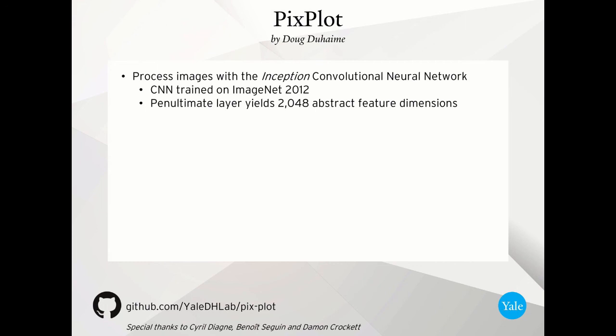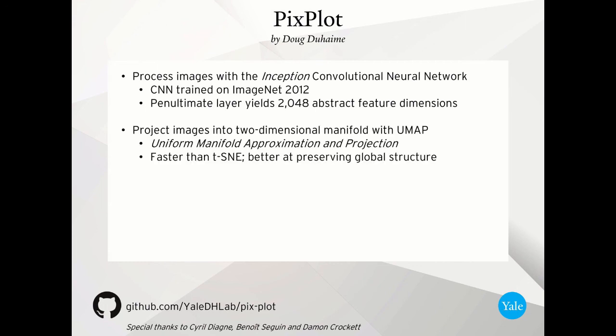This tool actually starts very similar to how neural neighbors work. We basically process all sorts of images, tens of thousands of images with the Inception Convolutional Neural Network, which is provided for free by Google in order to provide those labels that you might remember, cat, dog, bagel, banana. And what we use is the second to final layer. So we use the penultimate layer, which gives not those final labels, but rather 2048 abstract ways of seeing. This gives us a high-dimensional space. And rather than finding the approximate nearest neighbors in this high-dimensional space, as we did with neural neighbors, what we're going to do is we're going to try to compress this high-dimensional space into two dimensions.